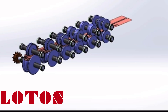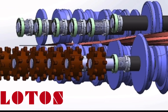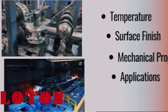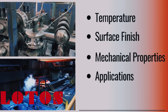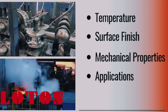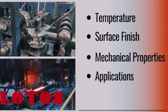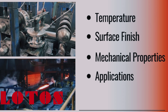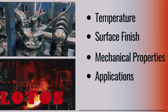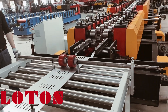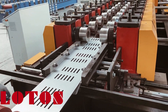In conclusion, whether it's hot rolling for speed and volume or cold rolling for precision and quality, each method plays a vital role in modern manufacturing. Regarding process temperatures: hot rolled steel is produced by heating steel above its recrystallization temperature and passing it through rollers to achieve the desired shape, typically rolled at temperatures above 1700 degrees Fahrenheit. Cold rolled steel is processed at room temperature or slightly below, where the steel is passed through rollers to reduce thickness and improve surface finish.